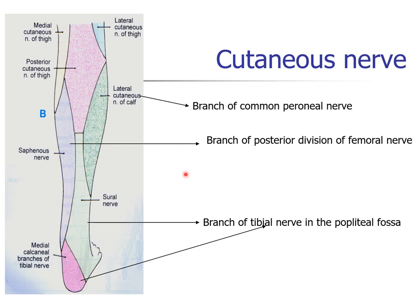Now, cutaneous nerves. Including the posterior cutaneous nerve of the calf, which supplies the upper part of the back of the leg after piercing the fascial roof of the popliteal fascia. Second is the sural nerve. This area is supplied by the sural nerve. It is the branch of the tibial nerve in the popliteal fossa, and the sural communicating branch of the common peroneal nerve meets near the middle of the back of the leg, after piercing the deep fascia and accompanying the small saphenous vein along the lateral margin of tendo calcaneum to supply the lower part of the skin of the calf.